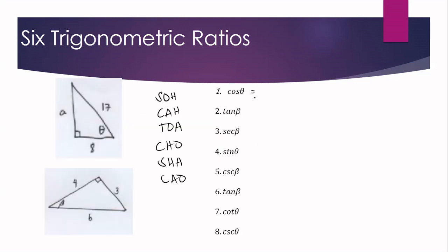Let us now check if you can recall the six trigonometric ratios using two practice figures — one with angle theta and one with angle beta. For number one, cosine theta: cosine is adjacent over hypotenuse. The adjacent side of theta is 8, and the hypotenuse — opposite the right angle — is 17. So cosine theta equals 8 over 17. For number two, tangent beta: tangent equals opposite over adjacent. The opposite side of beta is 3 and the adjacent side is 4. So tangent beta equals 3 over 4.